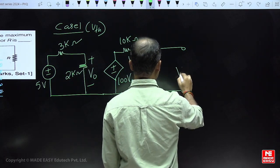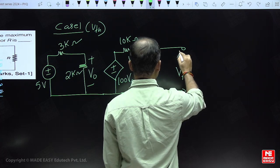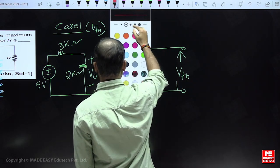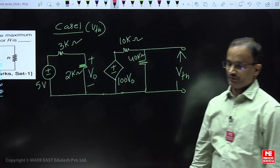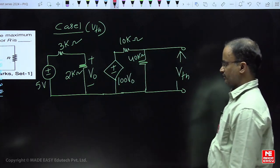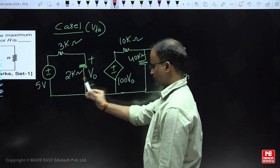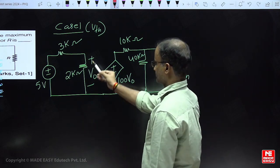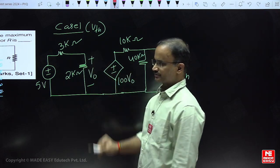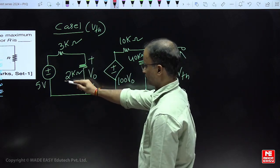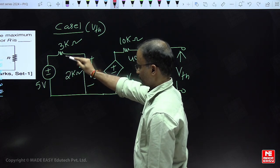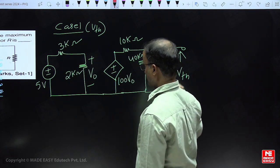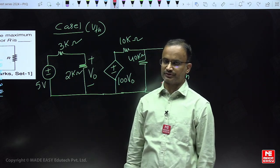Disconnect the load resistor and find the open circuit voltage. In this example, if you observe carefully, loop 1 and loop 2 both operate independently. The reason is that no return path is present. Due to this voltage source, if any current comes here, it cannot come back to its original position.